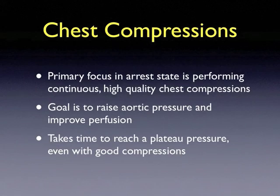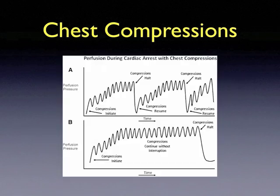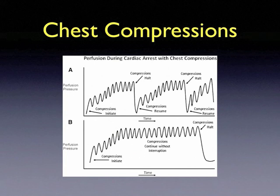The primary focus in an arrest state is to perform continuous, high-quality chest compressions with a goal of raising aortic pressure and improving perfusion. As shown on the graph, it does take time to reach a plateau pressure even with good compressions. With the initiation of compressions, perfusion pressure increases. However, when compressions are stopped, the perfusion pressure drops rapidly and takes time to raise back up to an adequate level. Thus, the goal during in-hospital resuscitations is to maintain a high compression fraction with continuous compressions without interruption to maintain aortic perfusion pressure and cerebral perfusion.